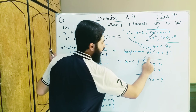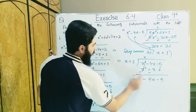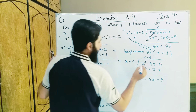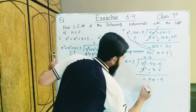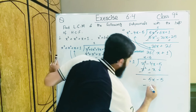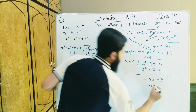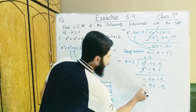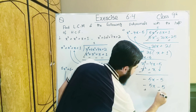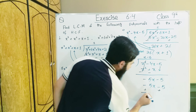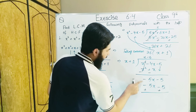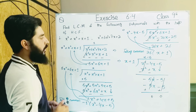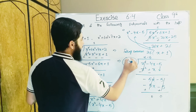Now what value do we write that when multiplied with x gives 5x? Since x is already there, we write minus 5. Why minus 5? Because minus 5 × x = minus 5x (plus minus = minus); and x × 5 = 5x; and minus 1 × 5 = 5. We put minus so that the signs change here — negative becomes positive, negative becomes positive.